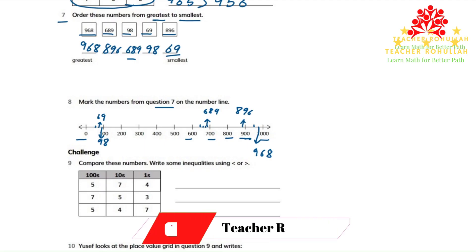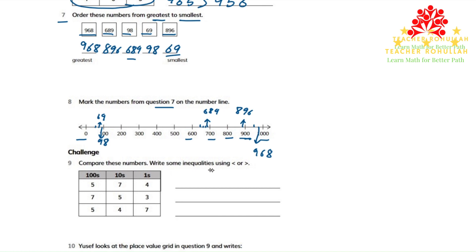In question number nine, it says: compare these numbers. Write an inequality using the smaller sign or the bigger sign. The first number is 574. The second number is 753.